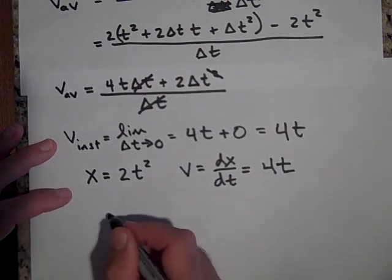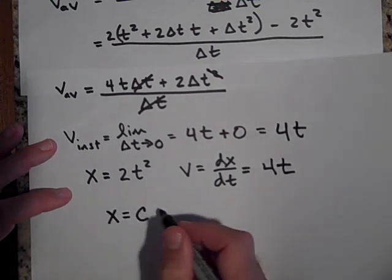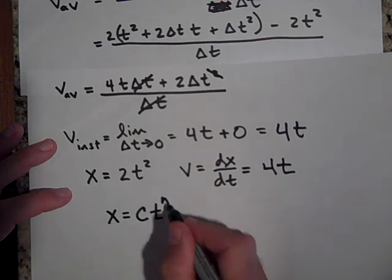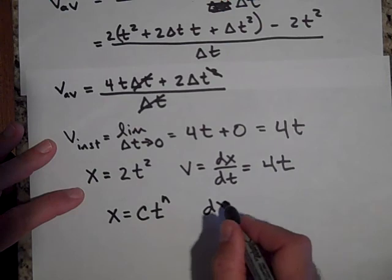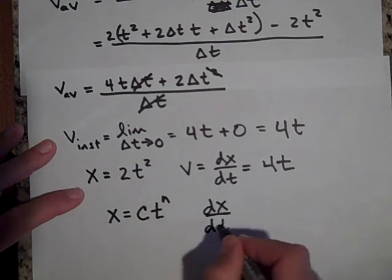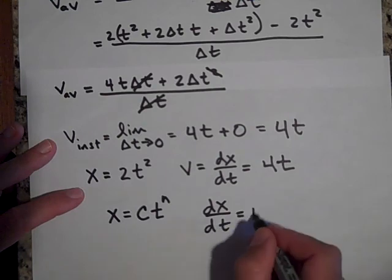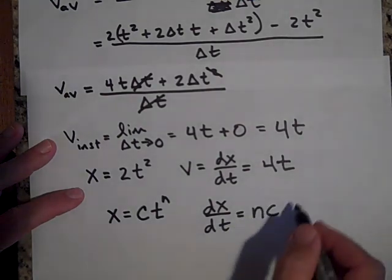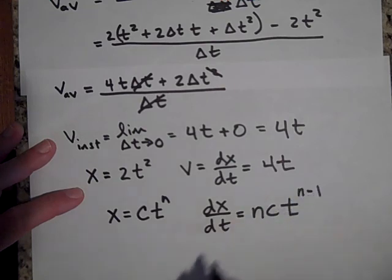x is equal to some constant c times t to the nth power, that the derivative of x with respect to time, is you just bring the n down and multiply times the c. And then you're going to lop 1 off of the exponent.